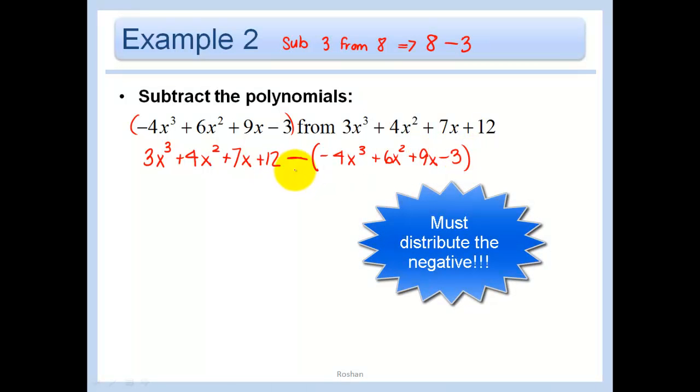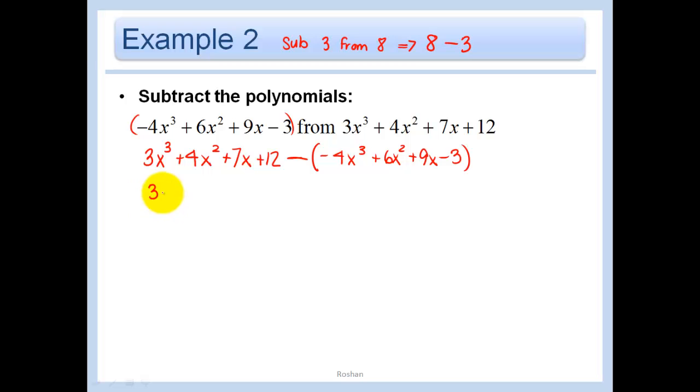You've got to be really careful with parentheses when you're subtracting because you need to make sure that you distribute this negative. And so in our next step, I'm just going to distribute that negative out. And I like to do that to make sure I don't make any mistakes. I really advise that you write this step here and don't just keep it in your head because that's how you make careless mistakes. So a negative times a negative is a positive. And then negative 6x squared minus 9x plus 3.